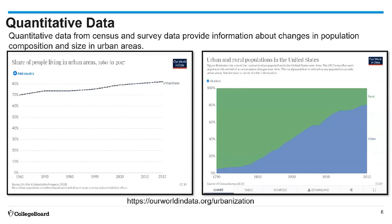We look at quantitative data about changes in population size in urban areas. These two graphs show basically the same type of information displayed differently, but both show how population is increasing in urban areas. In the graph on the right, you can see that in the 1790s a lot of people lived in rural areas, but over time most of our population is now living in urban areas.